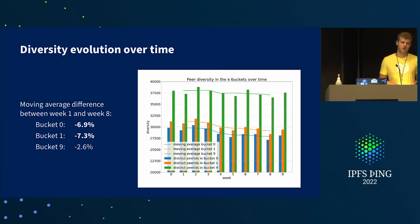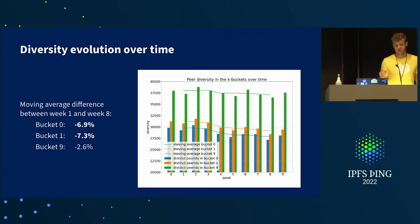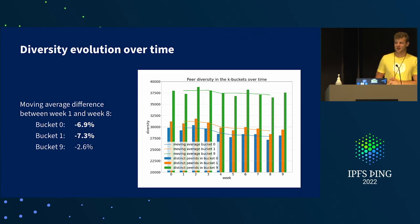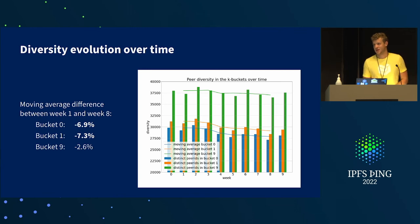An easy fix would be to change the replacement policy. Options include: adding a limited lifetime per entry so entries must be refreshed periodically; including a geo-locality component; or filling the key space of each bucket more uniformly. These are all methods that could improve the replacement policy and address the diversity decrease.